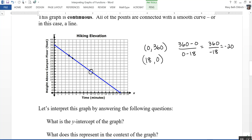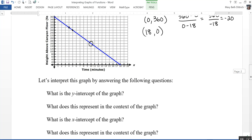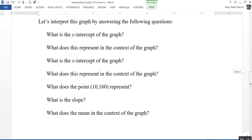When you're interpreting the graph of a function, you really want to take the time and look at all of these different points. What is the y-intercept of the graph? What does it mean within the context of the graph? What is the x-intercept of the graph? What does that mean? What's the slope, and what does that mean?